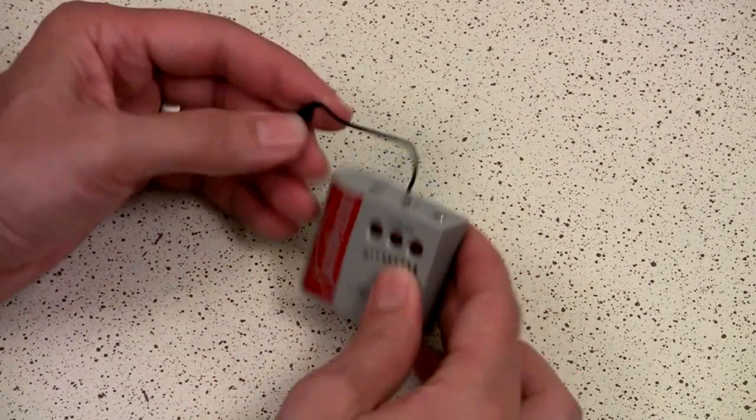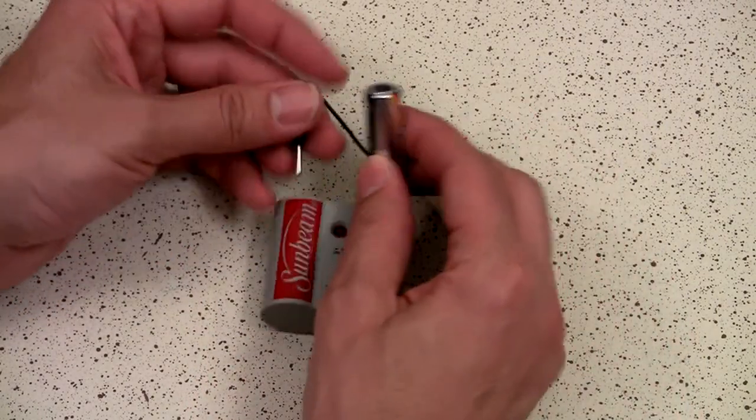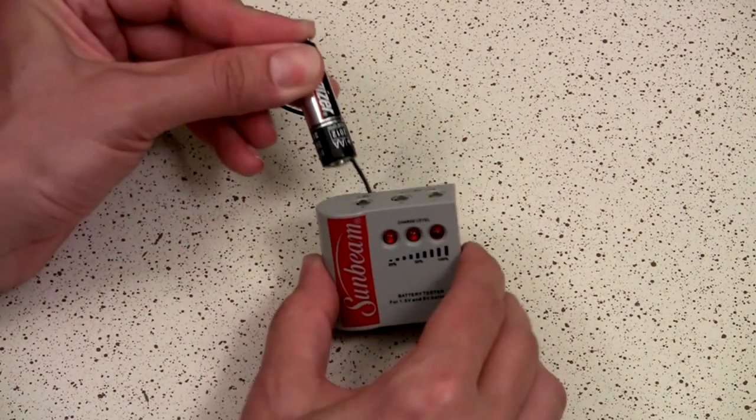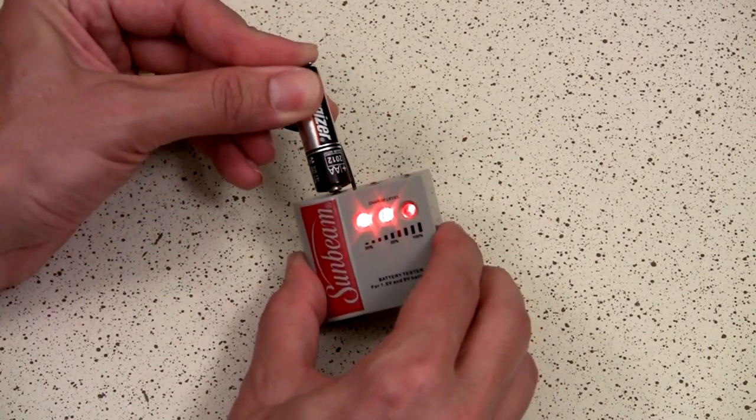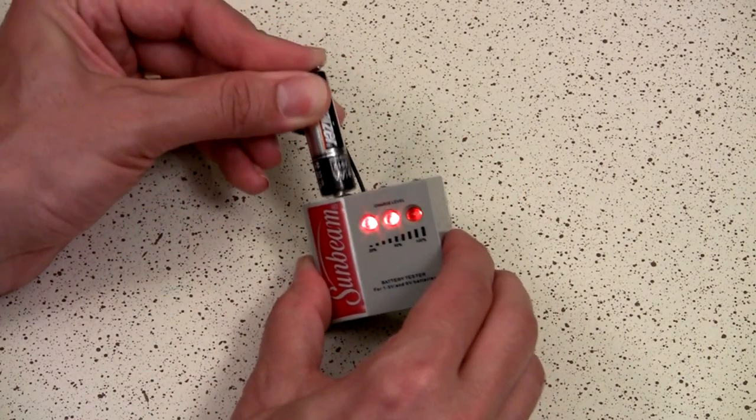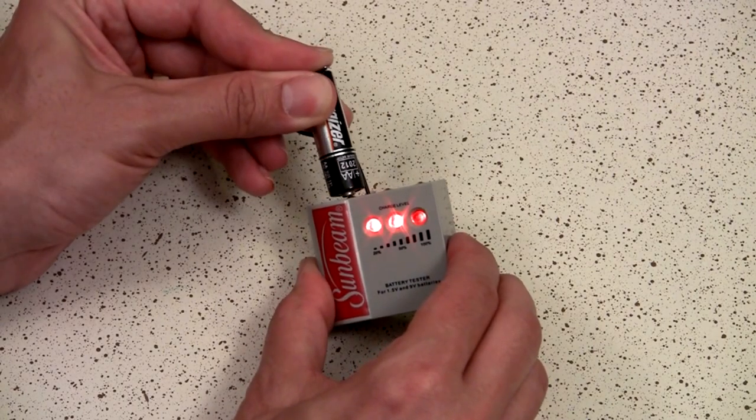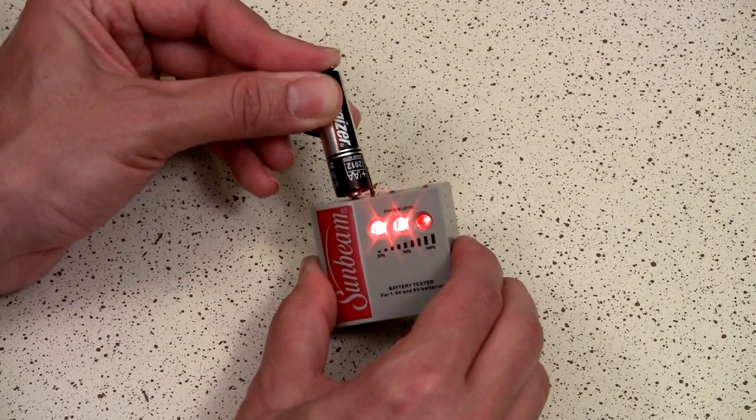It's your negative probe. You just take a battery, hold the probe on the negative side, and touch the contact there, and it'll tell you how much power your battery has left.